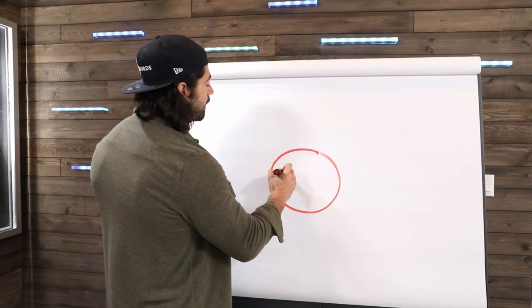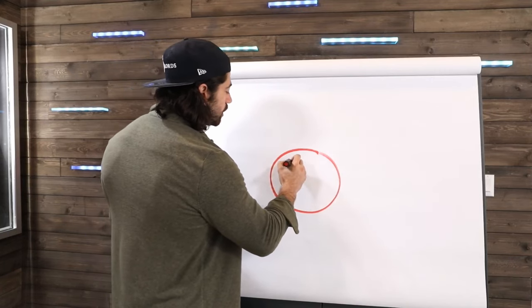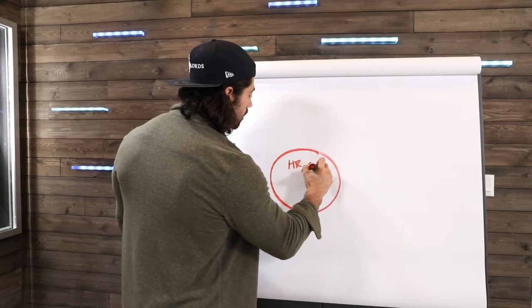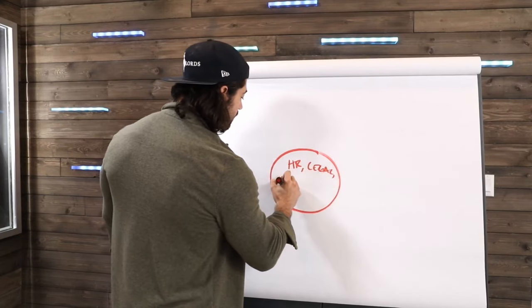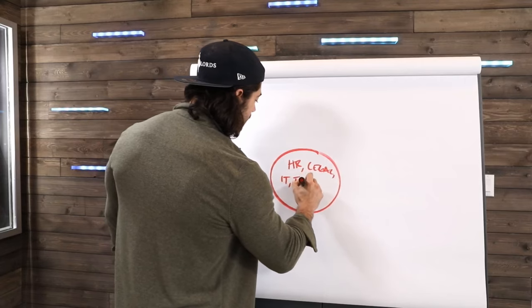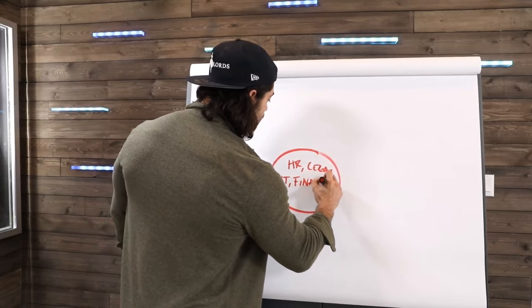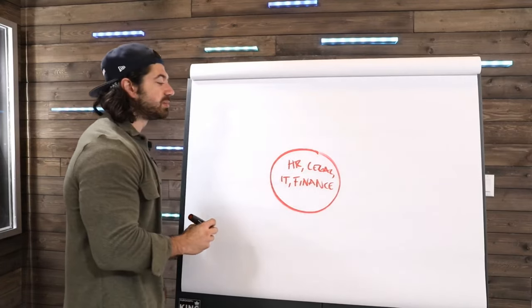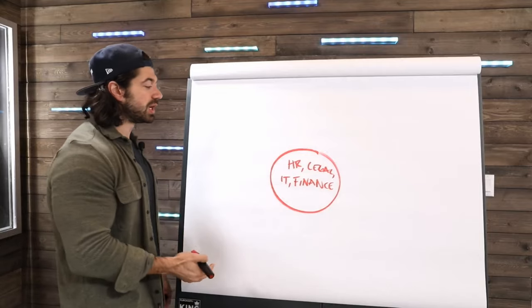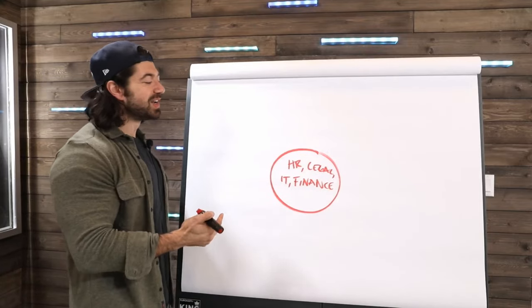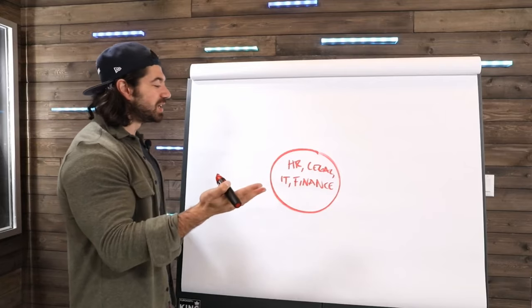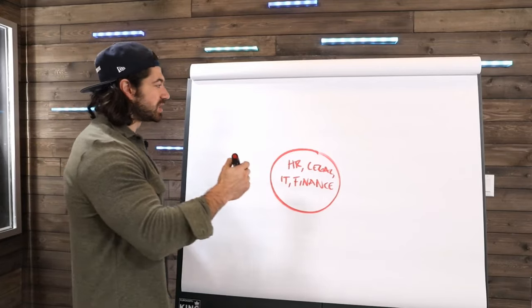And so what ends up happening is the way the structure looks like and the way it shifts to, I'll show you real quick, is it shifts to something like this. So you've got your core here, which is the operational infrastructure that we put in place from 10 to 30 million. So this is your HR, Legal, IT, finance. That's your core. That's the core ops of the business that has to happen or everyone goes to jail. People need to get paid. You need to pay taxes. Contracts need to be signed, CRMs, IT, all that kind of stuff.